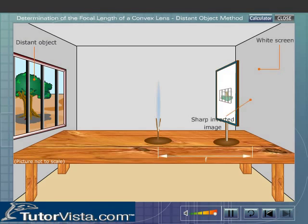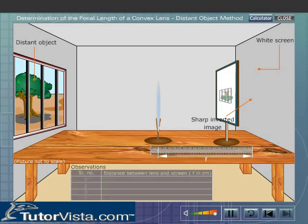Measure the distance between the lens and the screen. The distance between the lens and the screen is the focal length of the convex lens.